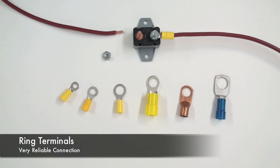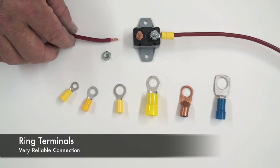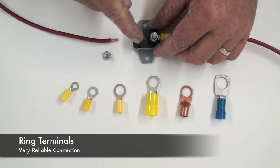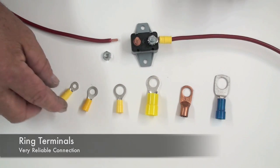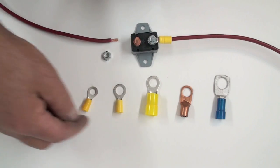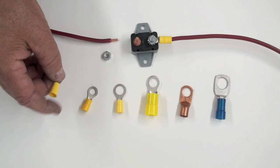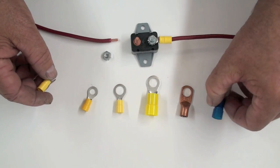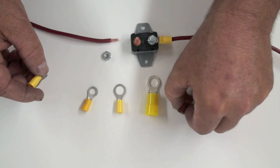These are ring terminals and they are used to make a very strong connection between your wire and a screw or terminal post. They come in different sizes. The smaller ones are for 10 to 12 gauge and these go all the way up to 4 and 8 gauge.